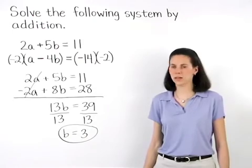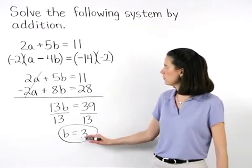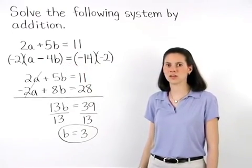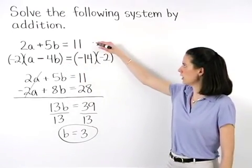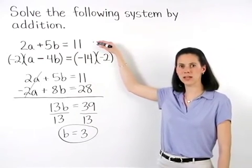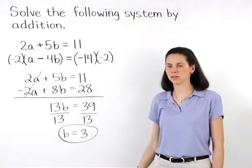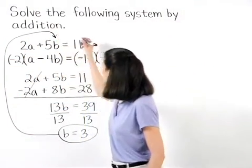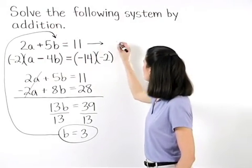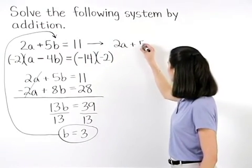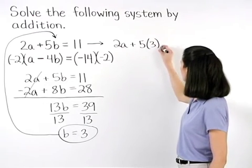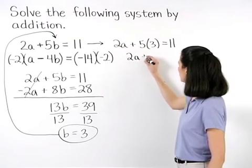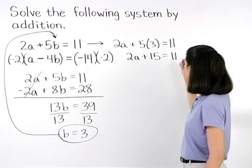To solve for a, we simply plug a 3 back in for b in either one of our two original equations. So let's use our first equation, 2a plus 5b equals 11. If we plug a 3 back in for b, this gives us 2a plus 5 times 3 equals 11, which simplifies to 2a plus 15 equals 11.